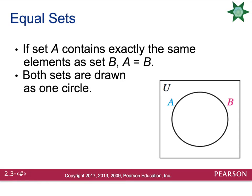On occasion, when you have multiple circles inside of the universal set, you could have two sets that are identical to each other. In this case, it's going to look like one circle. You won't be able to tell the difference between the two circles since they are equal to each other. So if you notice that you have multiple set labels but only one circle, then you are dealing with equal subsets.